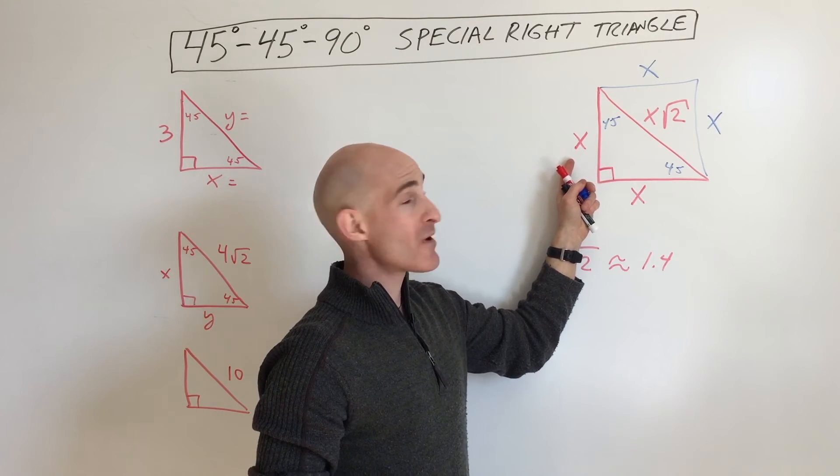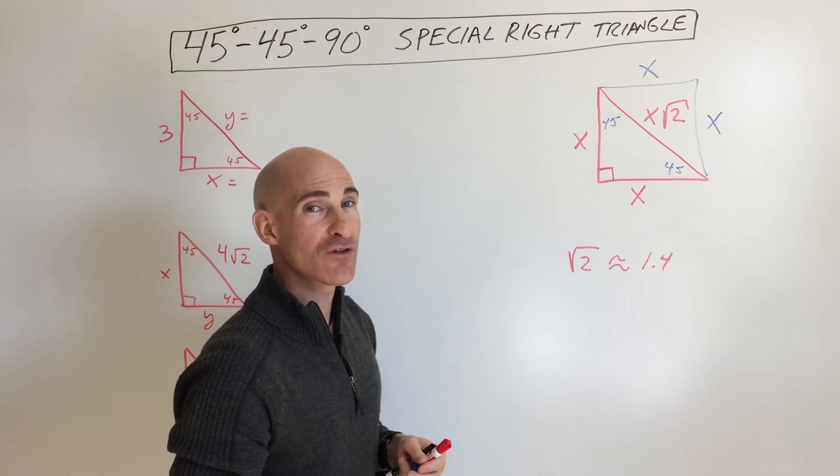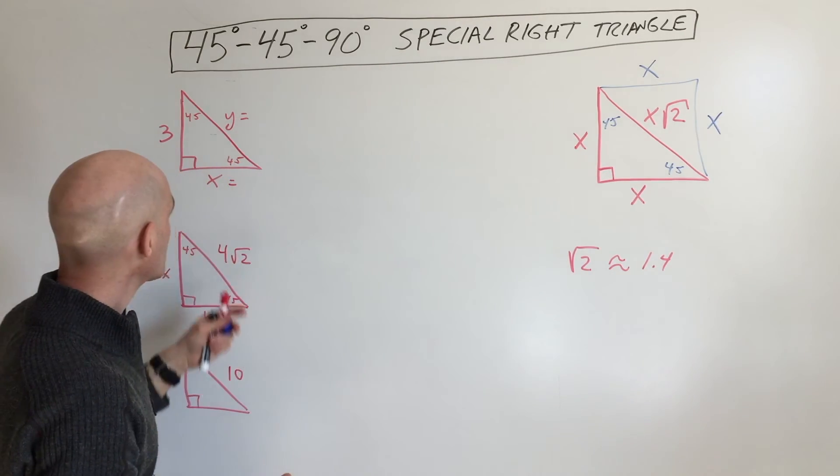So this is the ratio you want to remember: x, x, and x square root of 2 for 45, 45, 90 triangles. So let's look at some examples.